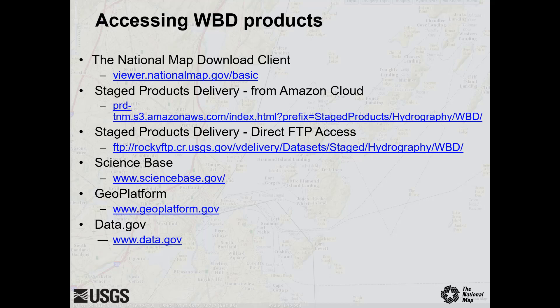WBD data can be downloaded from a number of source sites. This list provides the site names and links. The first site listed, the National Map Download Client, is the primary repository for digital USGS mapping data. You can download the WBD as its own dataset or packaged with the national hydrography data. Lesson 4a in this instructional series provides further details on using the download client.